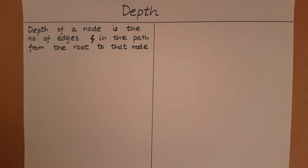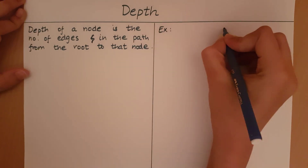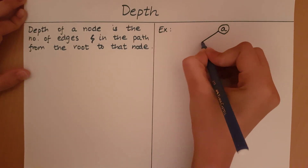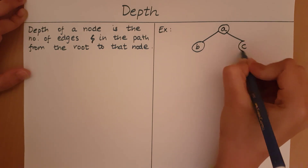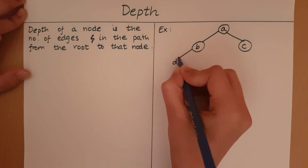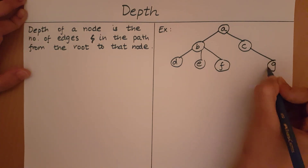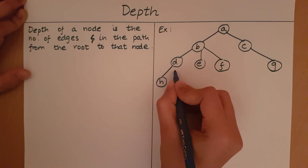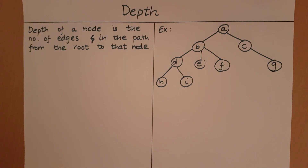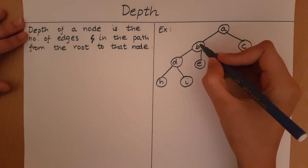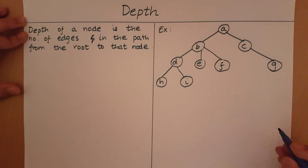Let's take a tree as an example and see whether we can calculate the depth of all the nodes in that tree. When we consider paths going from the root to other nodes, we will take a path in which all the edges are pointing downwards.